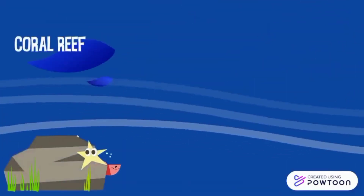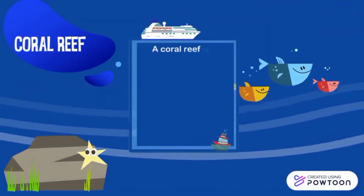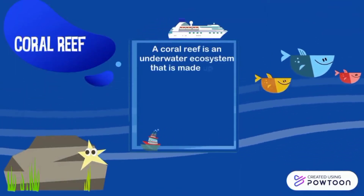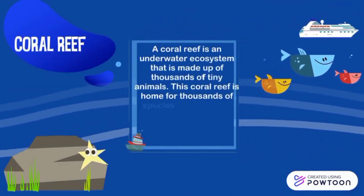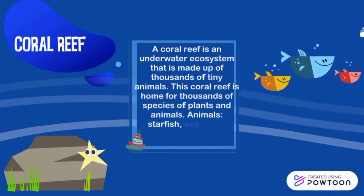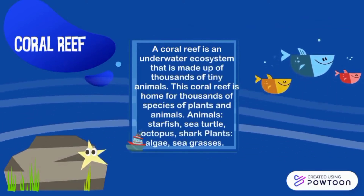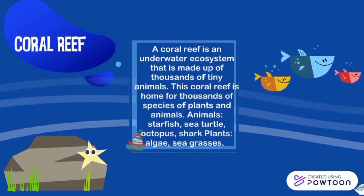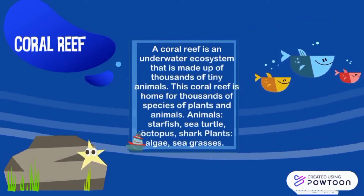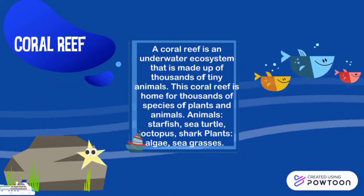A coral reef is an underwater ecosystem that is made up of thousands of tiny animals. This coral reef is home to thousands of species of plants and animals. Animals: starfish, sea turtle, octopus, shark. Plants: algae, sea grasses.